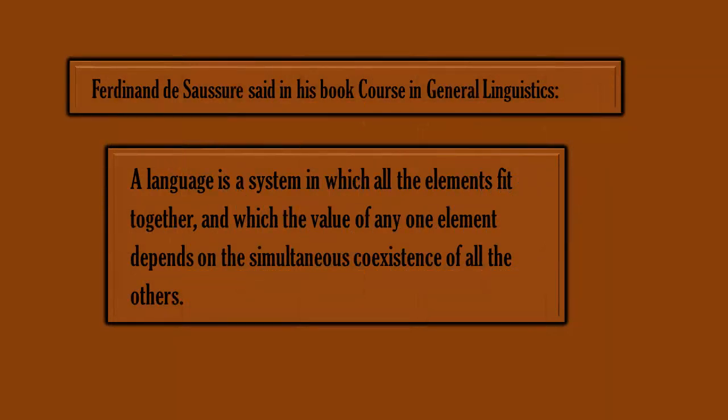Ferdinand de Saussure said in his book Course in General Linguistics: 'A language is a system in which all the elements fit together, and in which the value of any one element depends on the simultaneous co-existence of all the others.'